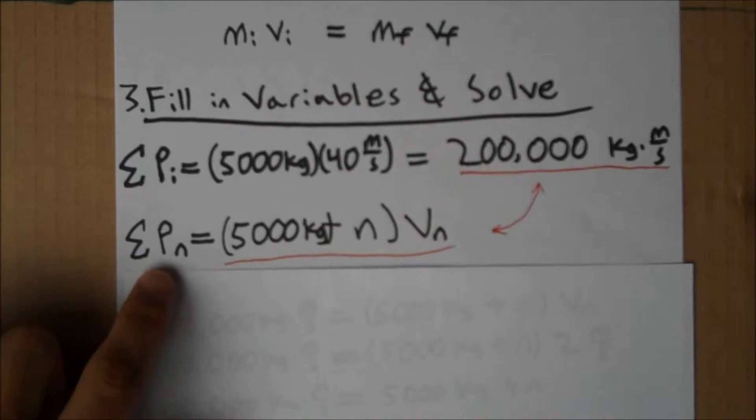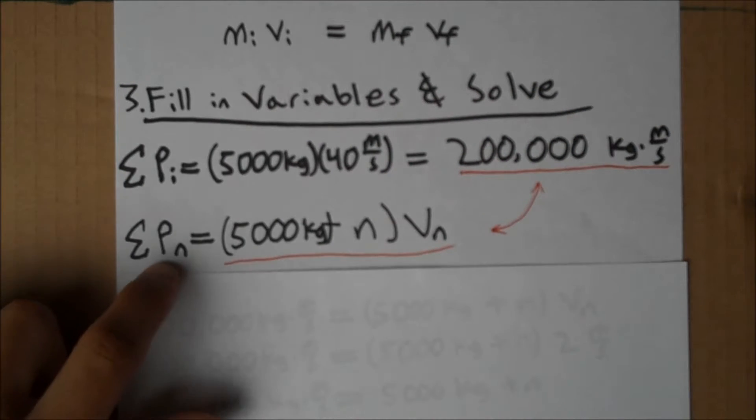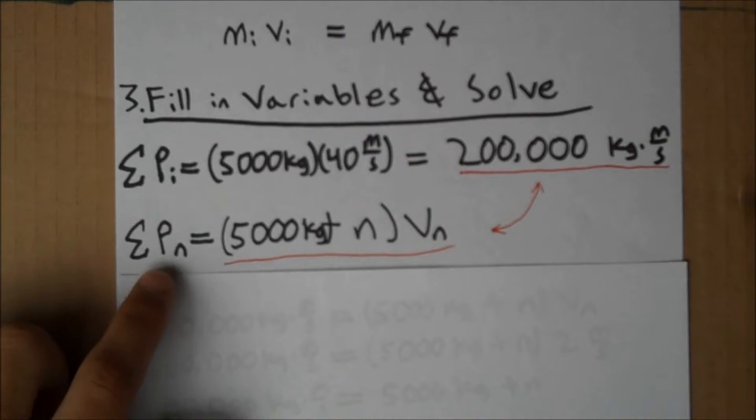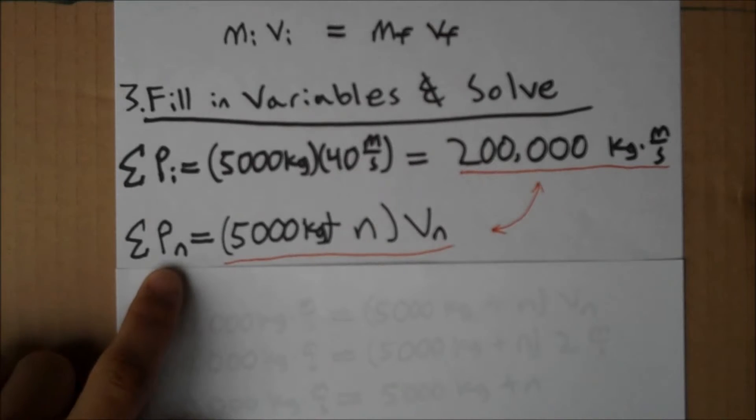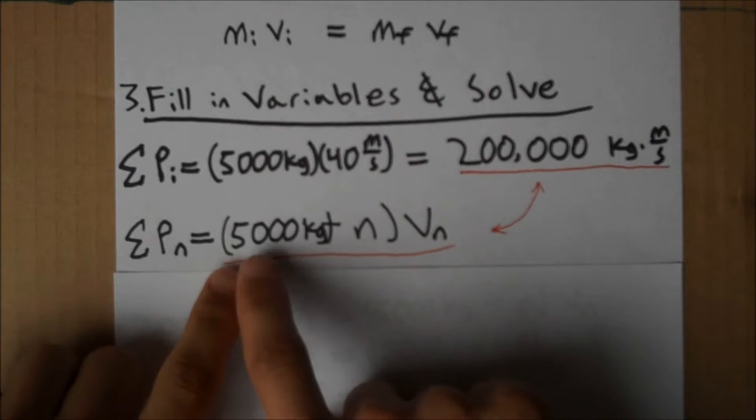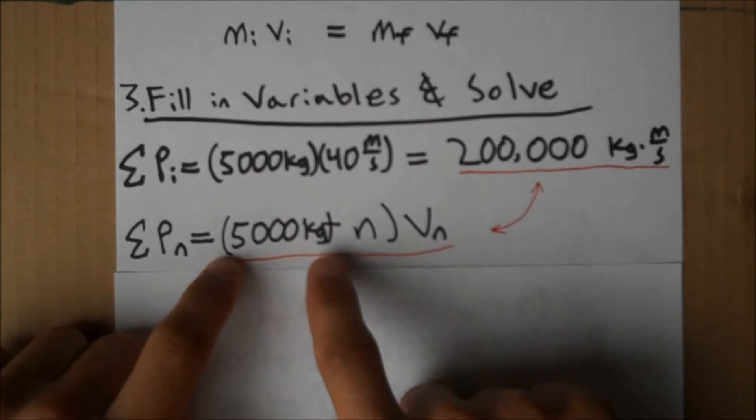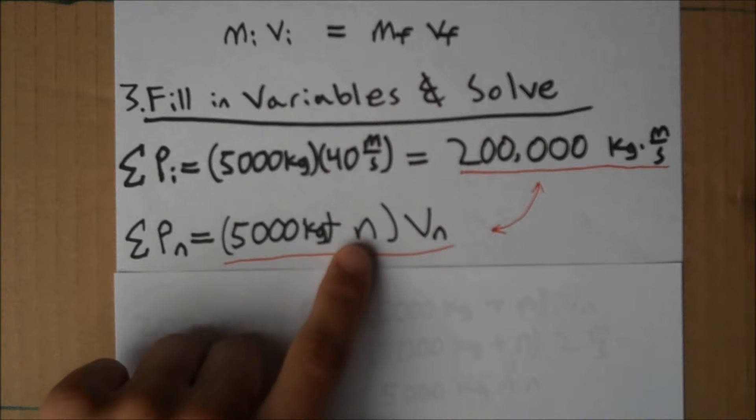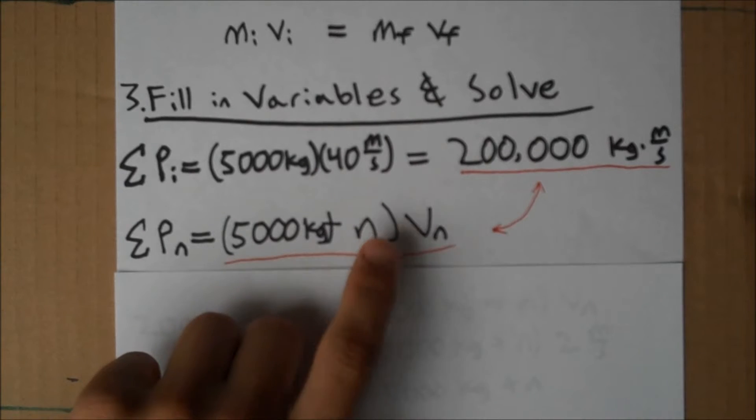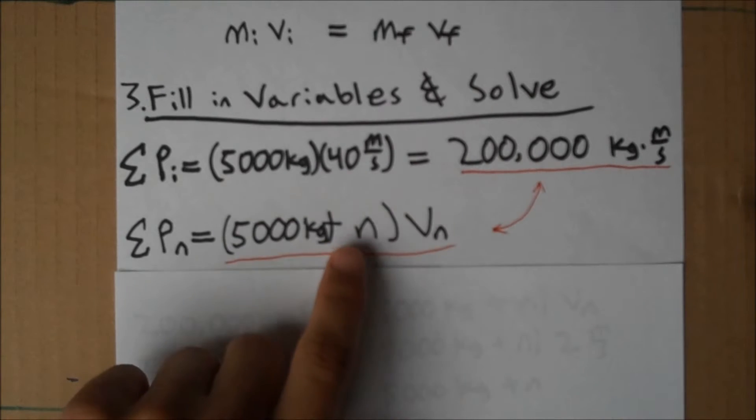Now to find the sum of p sub n. This is what we're going to call the momentum of the bulldozer and stuck garden gnomes after n collisions. After n collisions, our mass is now 5,000 kg plus n because each garden gnome is 1 kg. So, our mass will have increased to 5,000 plus n.